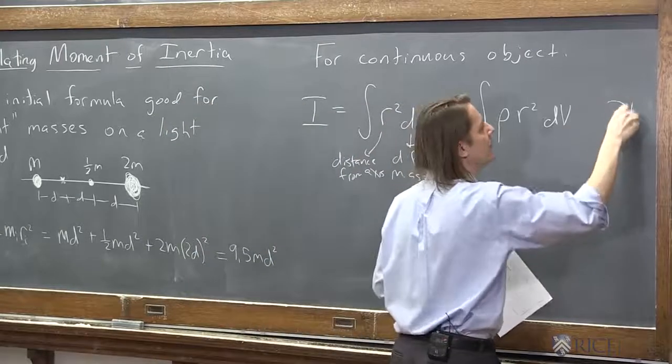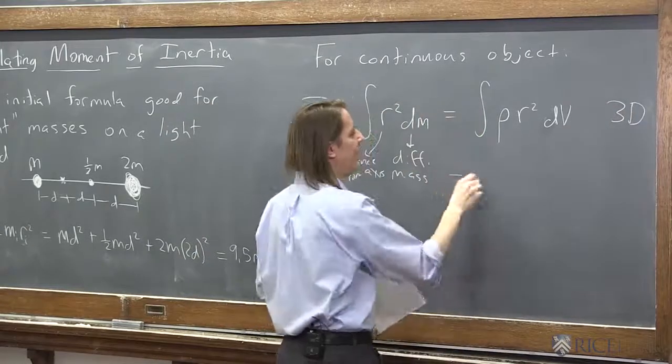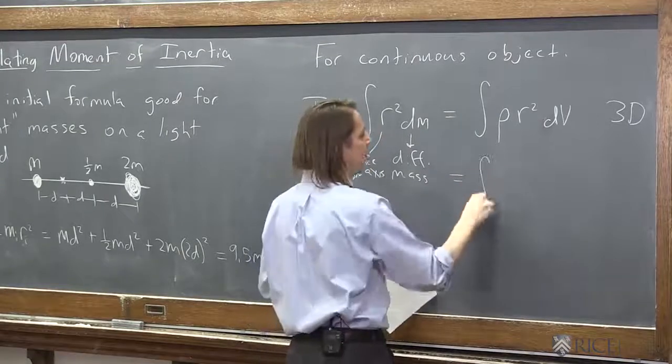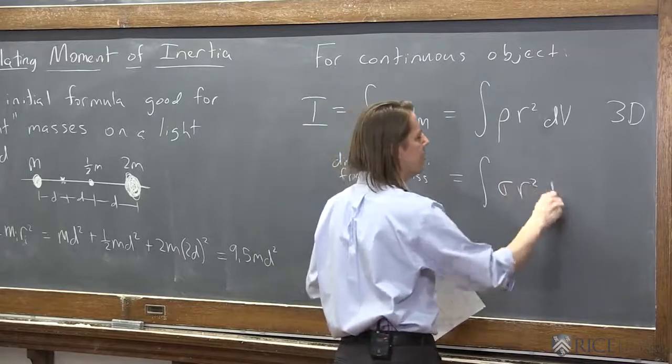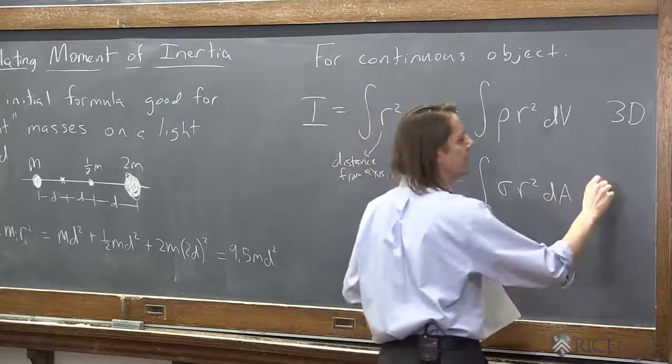So this is what you do for a fully 3D object. If you had like a flat sheet, you'd go with the mass per unit area, r squared, and that would be times dA. That's for like a 2D sheet.